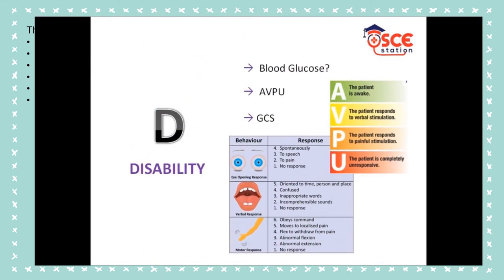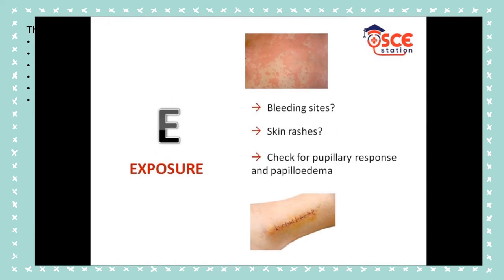D stands for disability. Check the patient's glucose levels and ensure the pupils are equal and reactive. Make a rapid initial assessment of the patient's conscious level using the AVPU method: A for alert, V for vocal stimuli, P for painful stimuli, and U for unresponsive to all stimuli. Also check the patient's drug chart for reversible drug-induced causes of low GCS. E stands for exposure and everything else relevant to the patient's case. Examine the rest of the body for skin changes and bleeding sites.